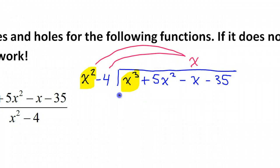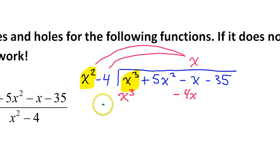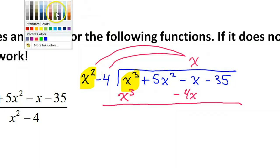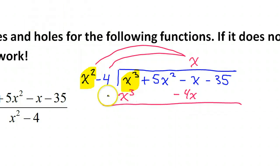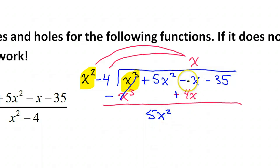x times x squared is x to the third power. x times negative four is negative four x. Line it up with your like terms. Now we need to subtract by changing the signs — this will become negative, this will become positive. Combining like terms, these cancel. Five x squared comes down. Negative one x and positive four x makes positive three x. And the negative thirty-five comes down.